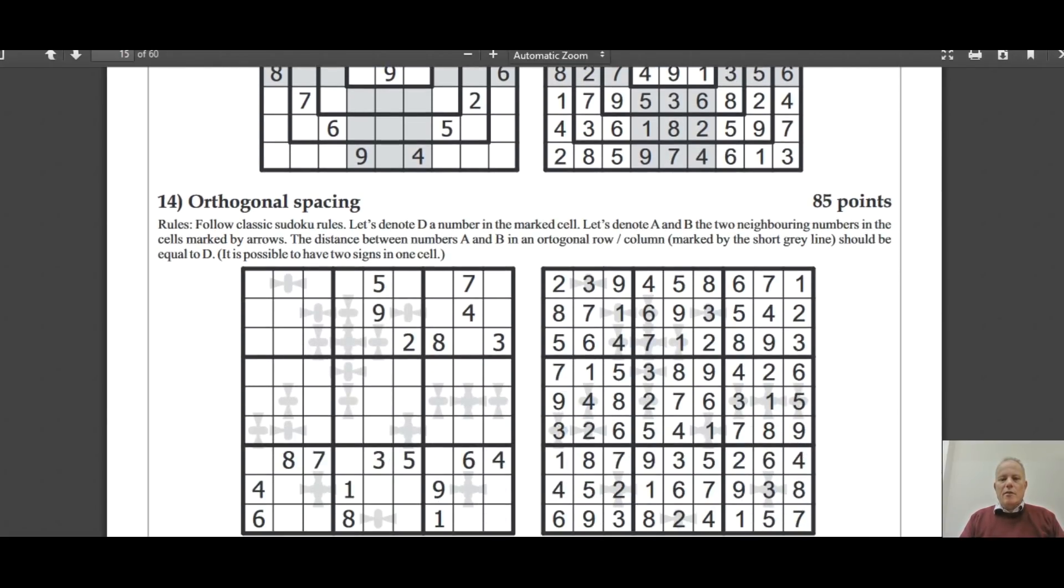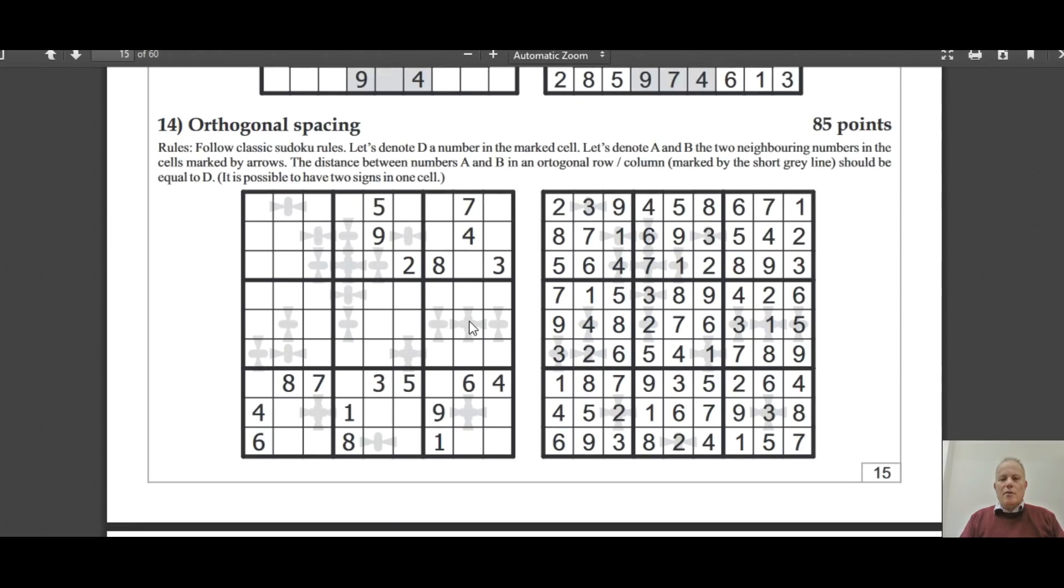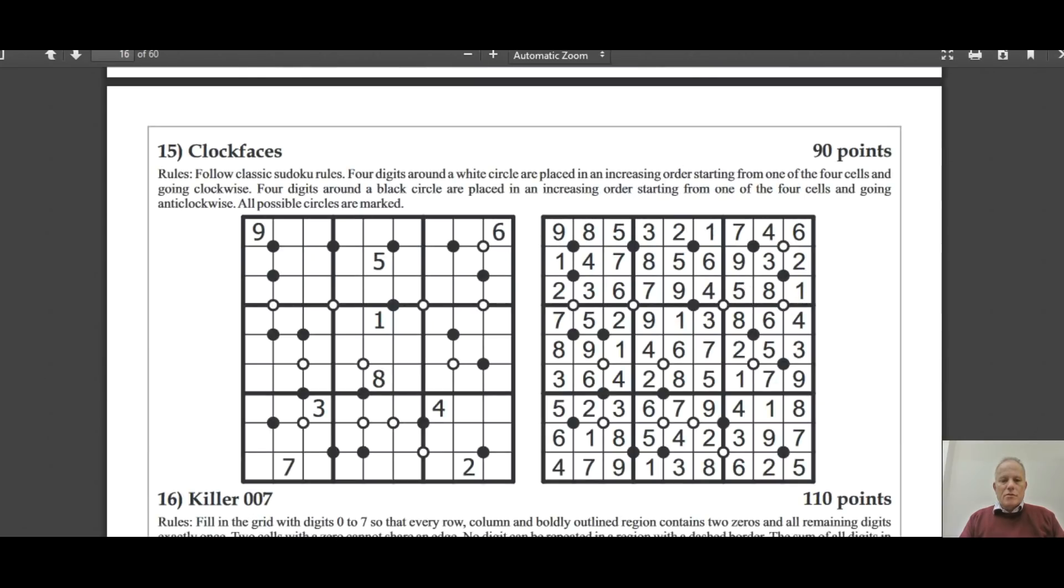Here's another one with some odd markings I've never seen before. There's lots of those. But it kind of means that here, this symbol has a nine and a five pointing to it and it's a three. And that means that in the column that the three is in, the nine and five must be three cells apart. Very weird rule constraint.